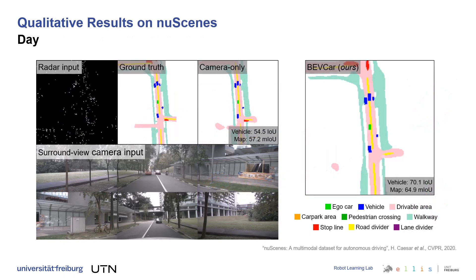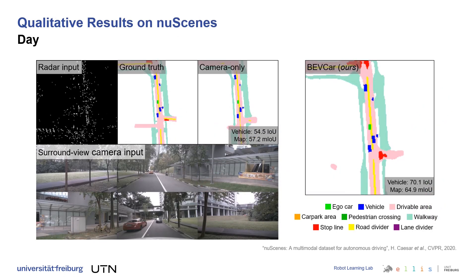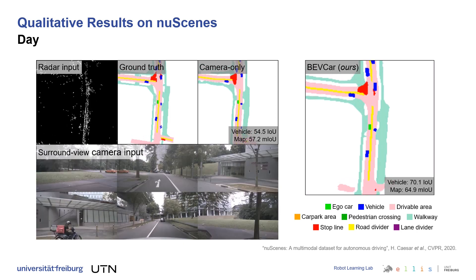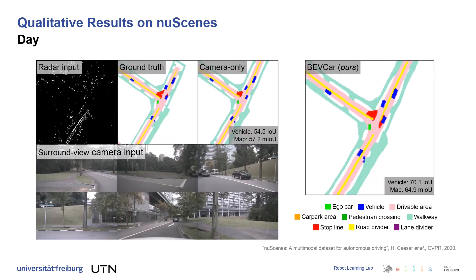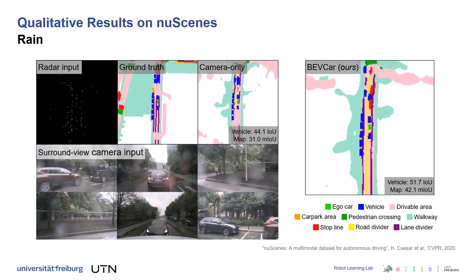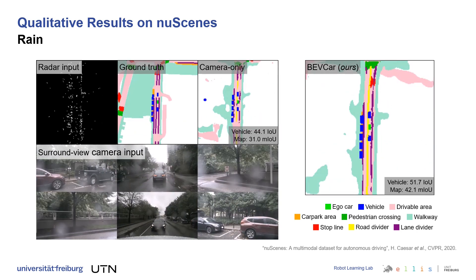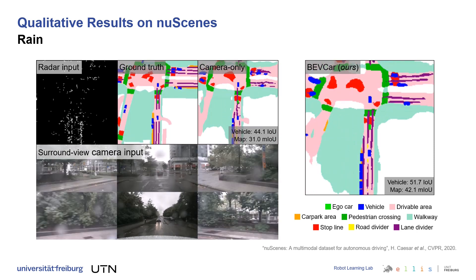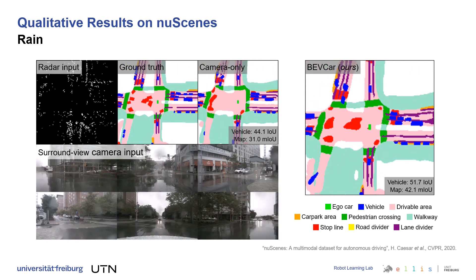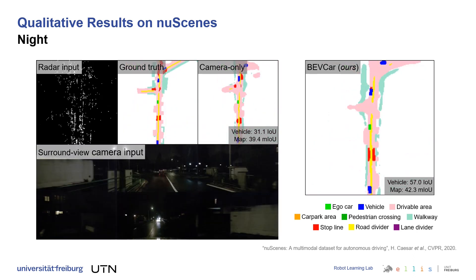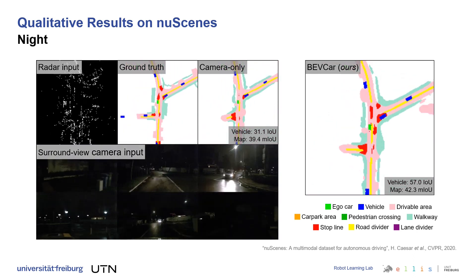Since passive sensors, such as RGB cameras, suffer from challenging illumination conditions, we separate the nuScenes validation split into day, rain, and night scenes. Here we present qualitative results for our BEVCar and the derived camera-only variant. We report the metrics averaged over the entire scene. Our studies clearly indicate the benefit of utilizing automotive radar in addition to surround-view vision.